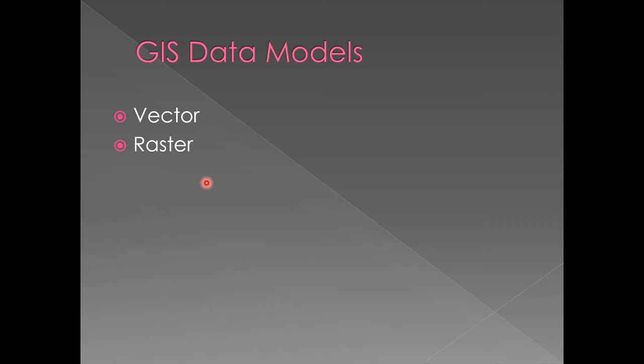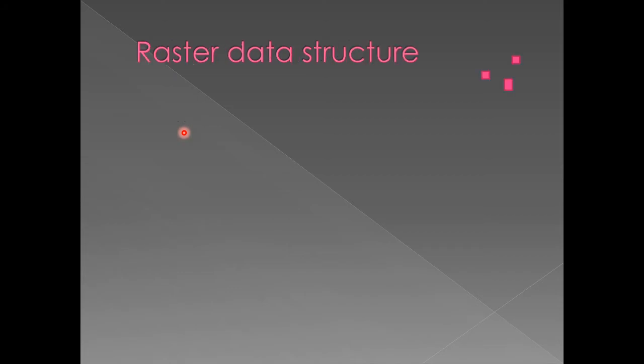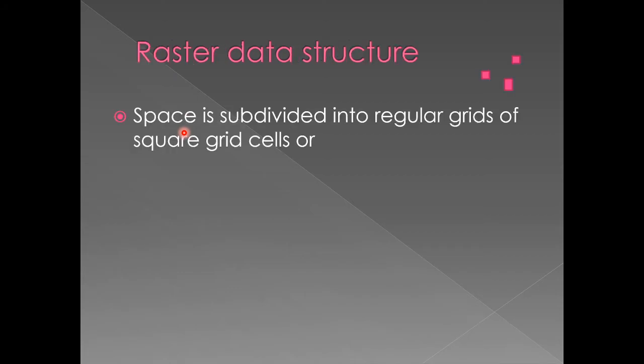So if he wanted to draw Jerry John Rawlings or any popular figure, he would take the picture, draw squares on it, and draw squares on the canvas. What he did was simply transfer — when he saw red in one square, he put red there. That is the idea of the raster model. The raster data structure divides the world into regular grid squares.